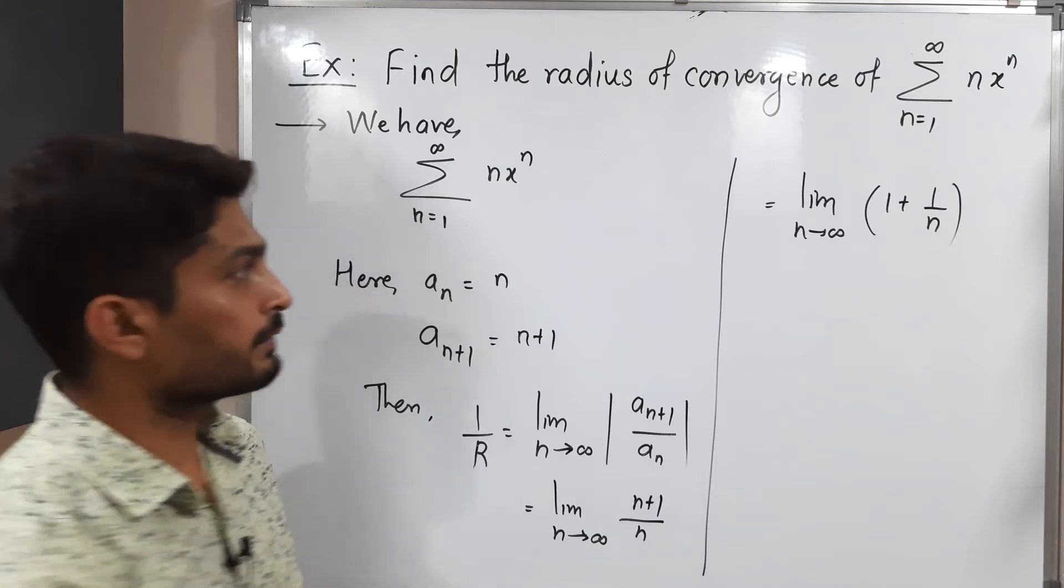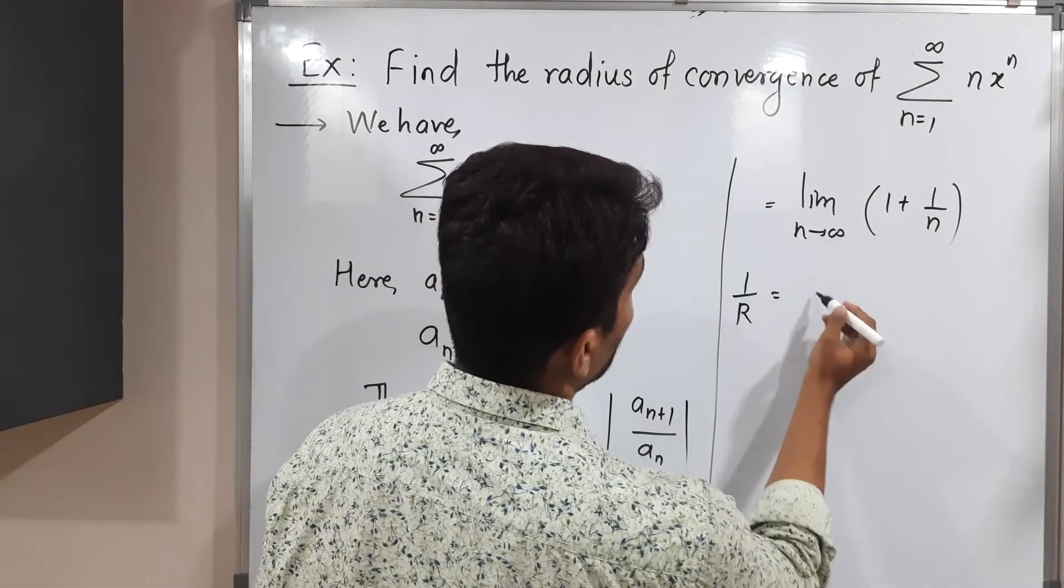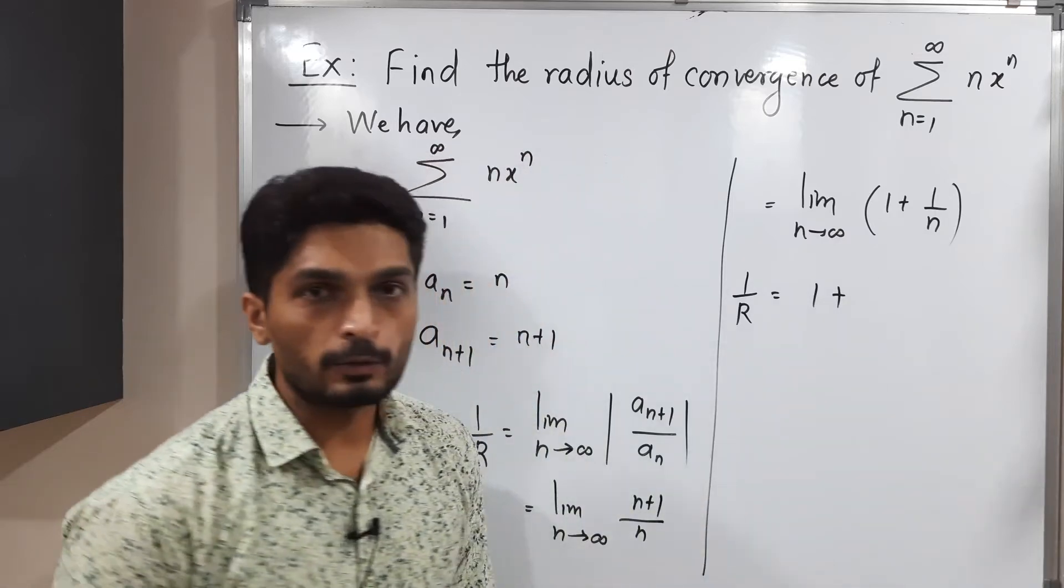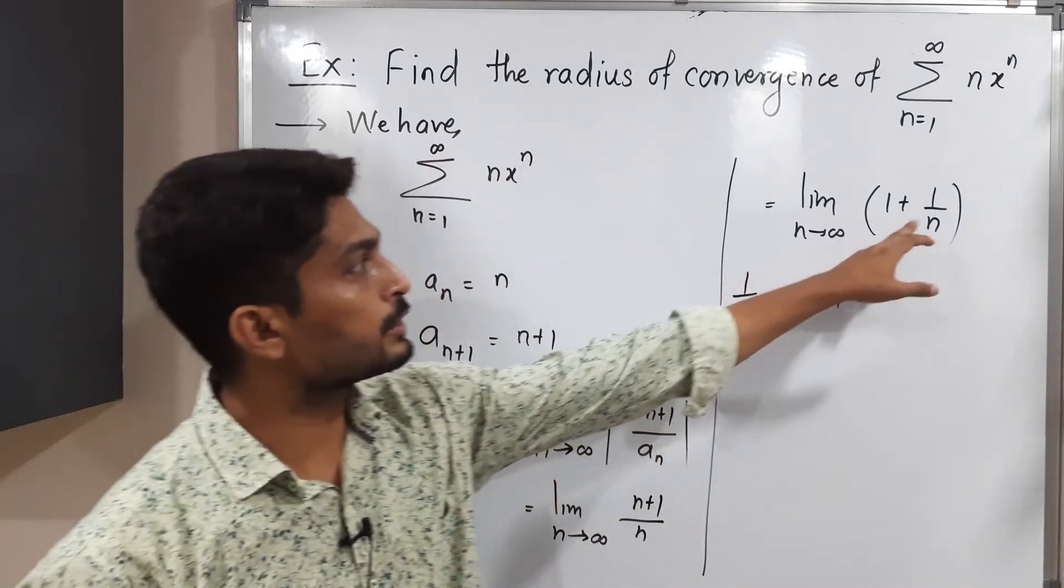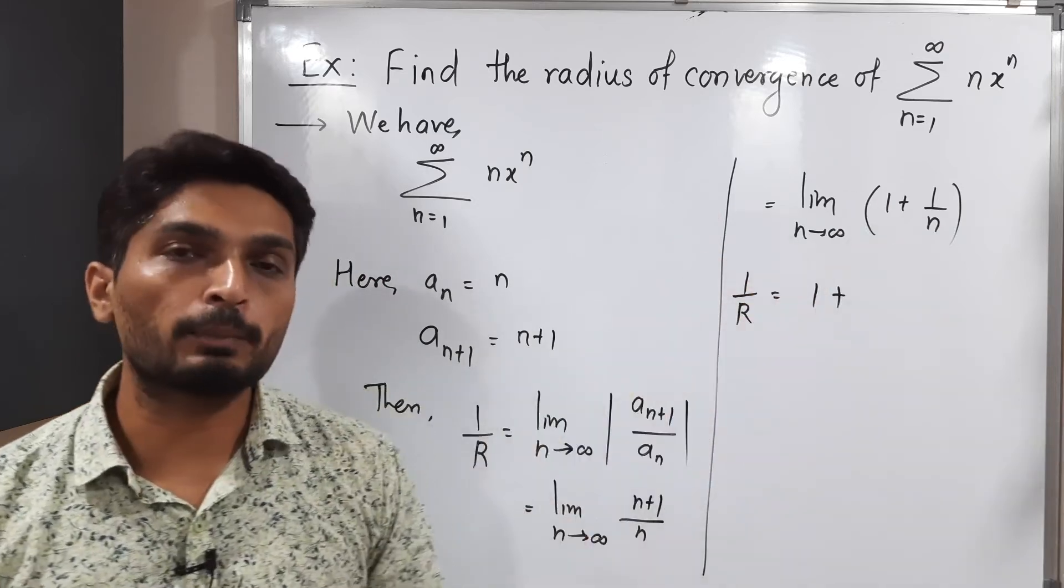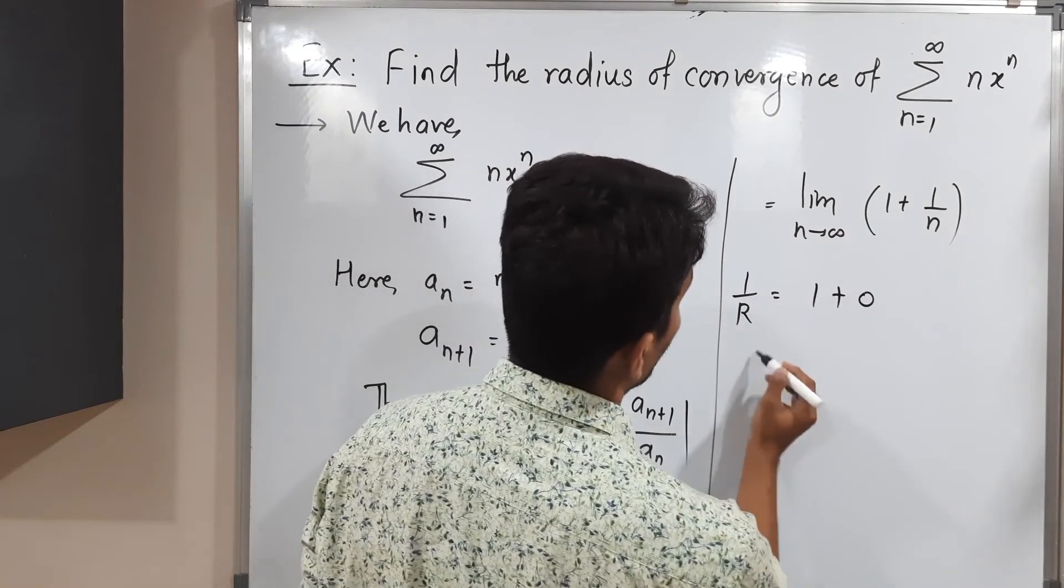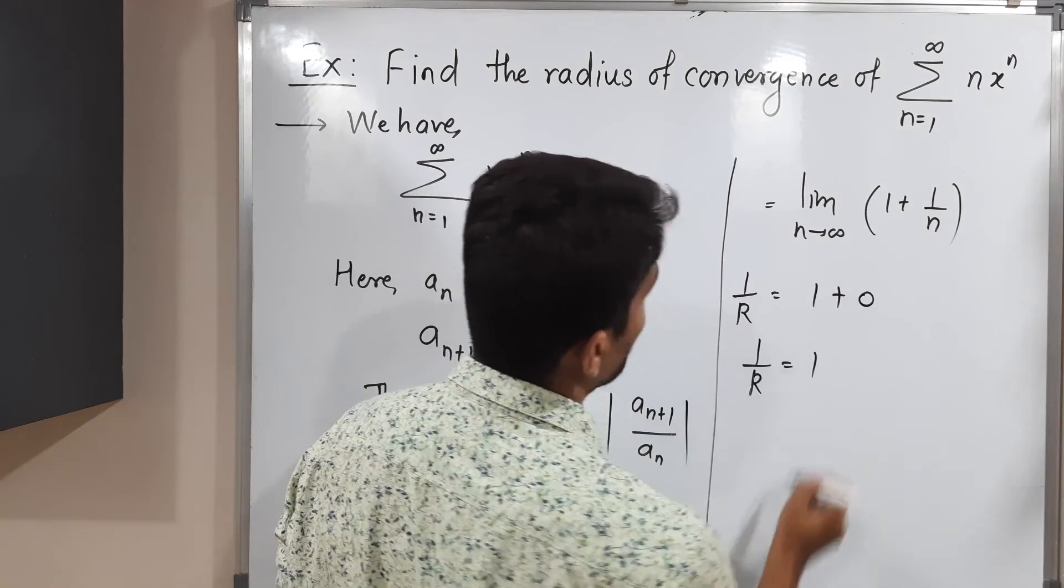So if you apply the limit, what will happen? This is the value of 1/R. When you apply the limit, 1 is a constant so you will have the same value. But if you apply the limit to 1/n, as n approaches infinity, you will have 1/infinity. Its value is 0. So 1 + 0. So 1/R equals 1.